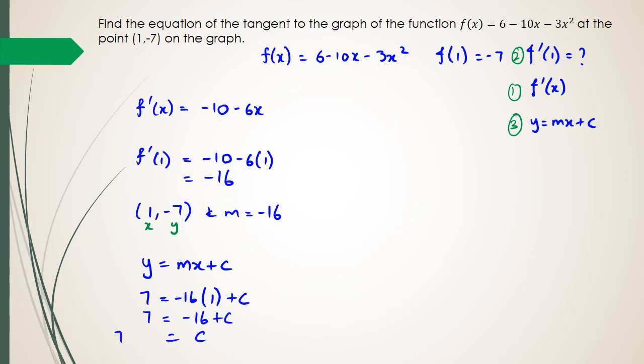And then, c is equal to 7 plus 16. So, from this, we can say that c is equal to 23. So, the equation of this tangent is going to be y equals minus 16x, because negative 16 is the gradient, plus 23.